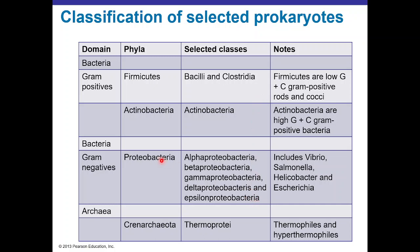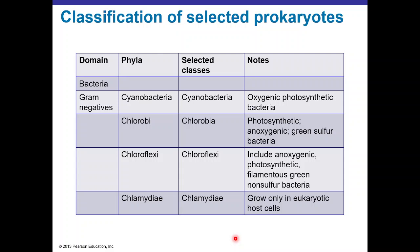For gram negatives, we have a phylum called Proteobacteria with different classes ranging from Alpha to Epsilon Proteobacteria. In Archaea, we have the phylum Crenarchaeota with selected classes like Thermoprotei, which includes thermophiles and hyperthermophiles. Within gram negatives, we have bacteria with different metabolic reactions leading to photosynthesis — like Cyanobacteria, which are oxygenic, and Chlorobi, which are anoxygenic. The difference is that one uses oxygen and the other doesn't.